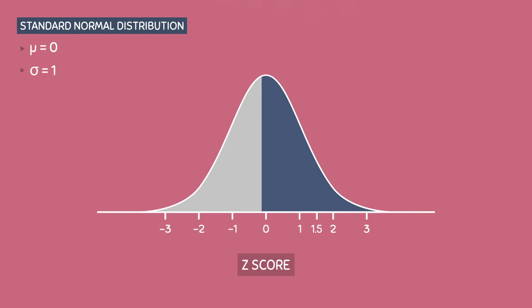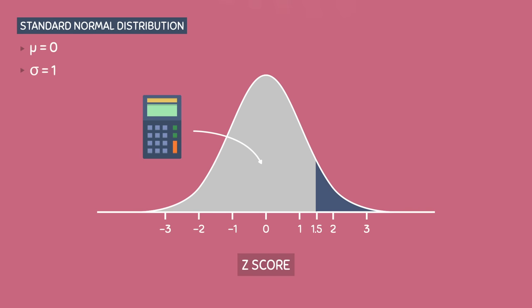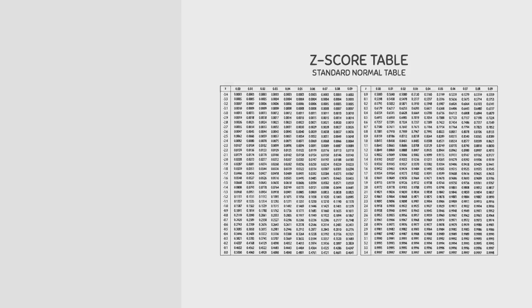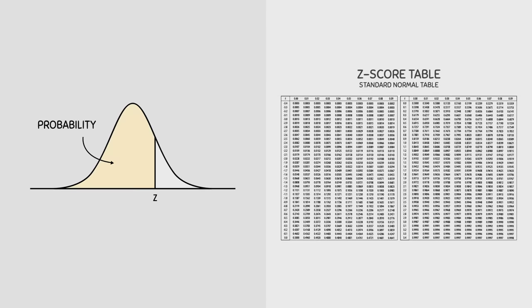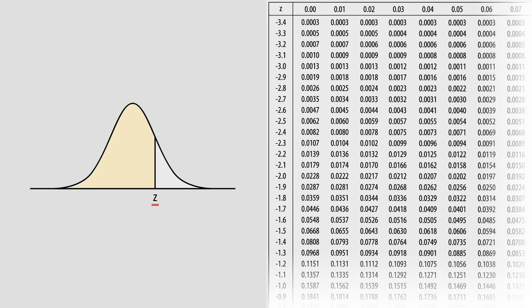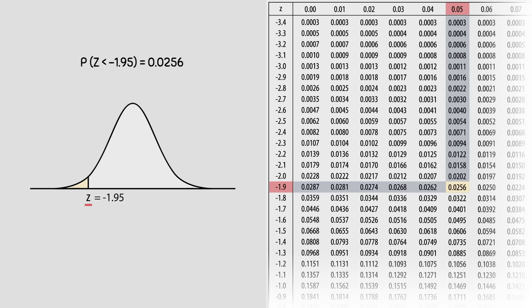Most importantly, a z-score allows us to calculate how much area that specific z-score is associated with, and we can find out that exact area using something called a z-score table, also known as the standard normal table. This table tells us the total amount of area contained to the left side of any value of z. The top row and the first column correspond to z values, and all the numbers in the middle correspond to areas. For example, a z-score of negative 1.95 has an area of 0.0256 to the left of it. To say this more formally, the proportion of z less than negative 1.95 is equal to 0.0256.